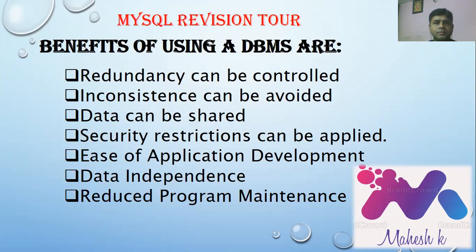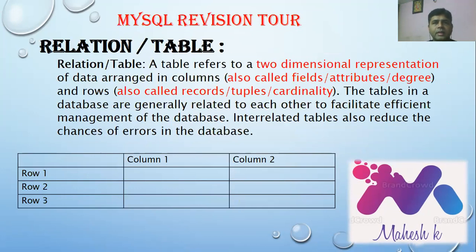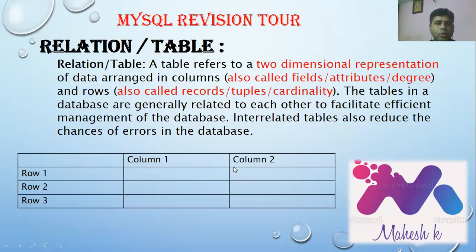A relation or table refers to the two-dimensional representation of data arranged in columns — also called fields, attributes, or degree — and rows — also called records, tuples, or cardinality. Tables in a database are generally related to each other to facilitate efficient management. Columns are represented in the vertical aspect and rows in the horizontal aspect.